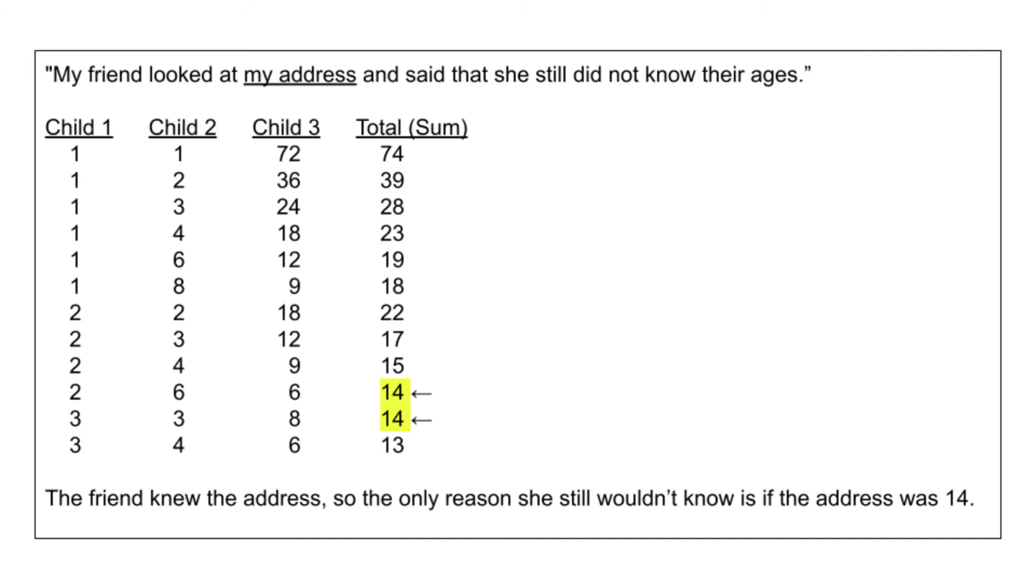So, my address was 14, and when she was looking at the sum of the ages, she saw that two values had the number 14, and therefore she still wasn't aware of what their ages were. If it was any other number besides the 14 in our total sum column, she would have right away known what their ages were.